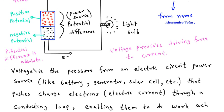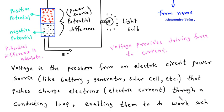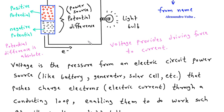Voltage is the pressure from an electric circuit power source, like a battery, generator, solar cell, etc., that pushes charged electrons (electric current) through a conducting loop or conductor.